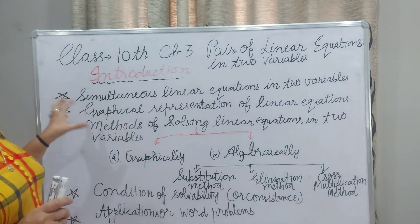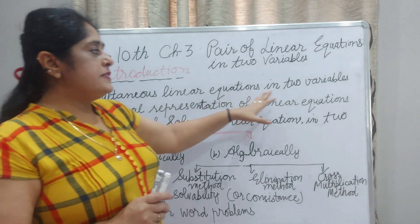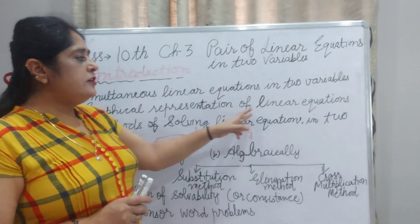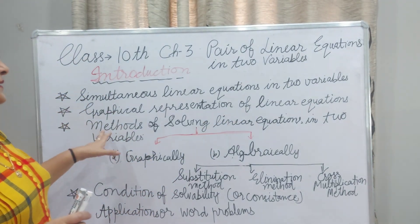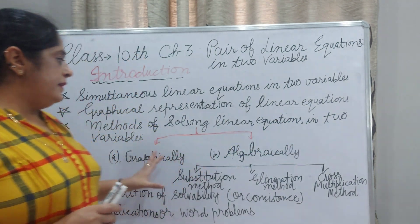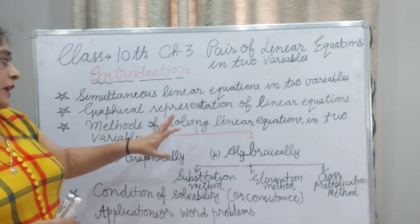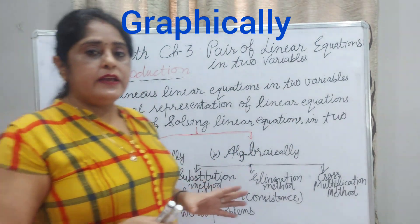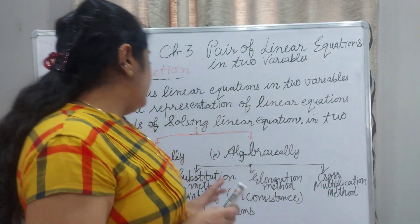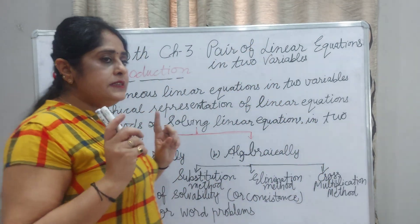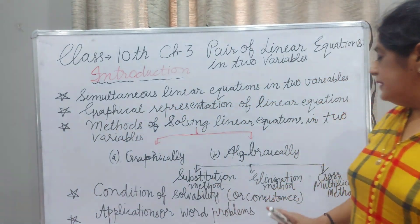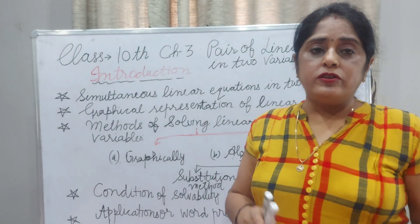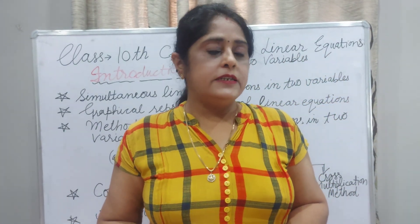In this chapter we will discuss simultaneous linear equations in two variables, and graphical representation of linear equations. Third, we will discuss methods of solving linear equations in two variables. There are two methods: one is graphically and one is algebraically. Algebraically there are three methods: substitution method, annihilation method, and cross multiplication method. For this year, cross multiplication method is deleted from your syllabus.